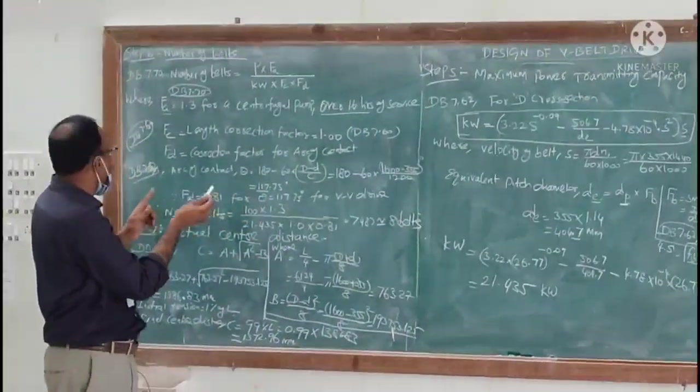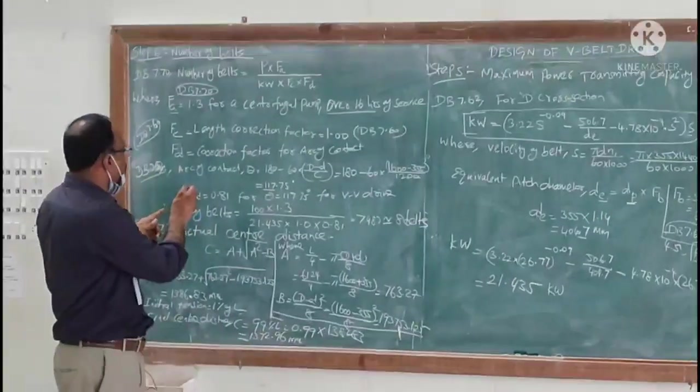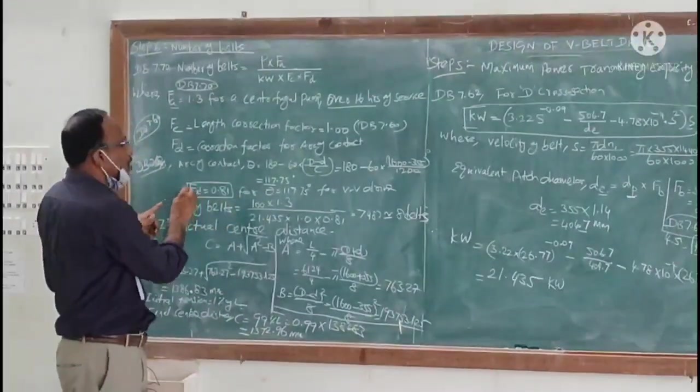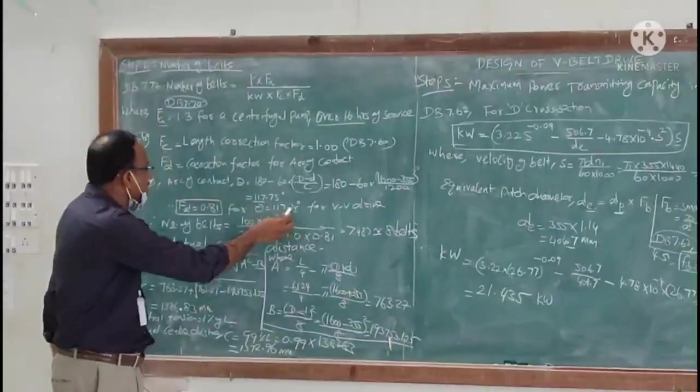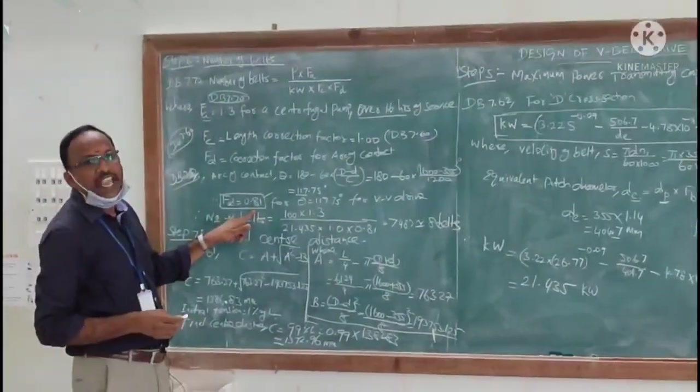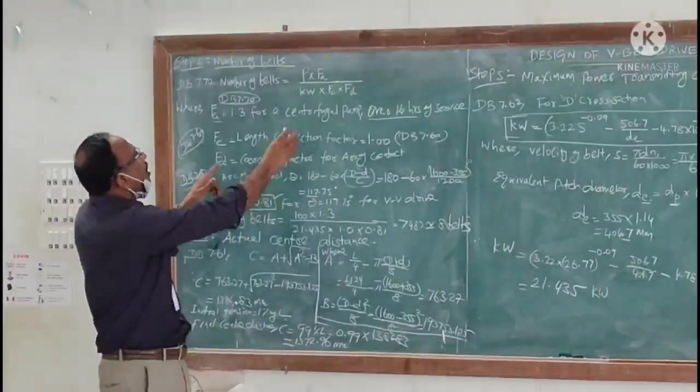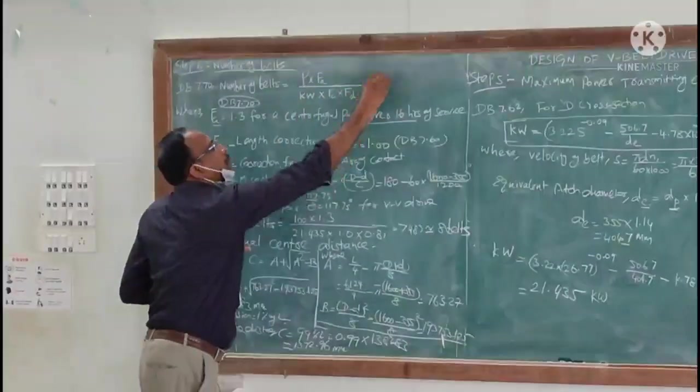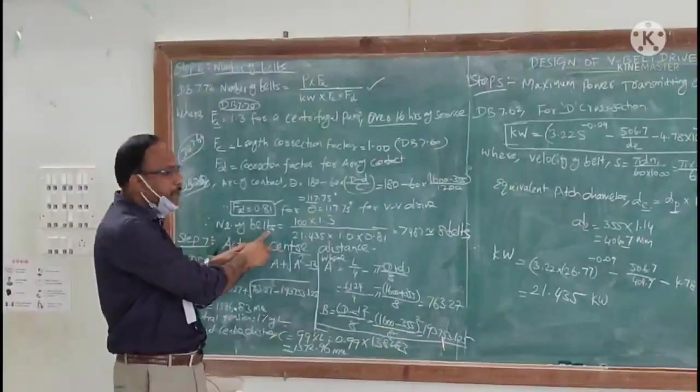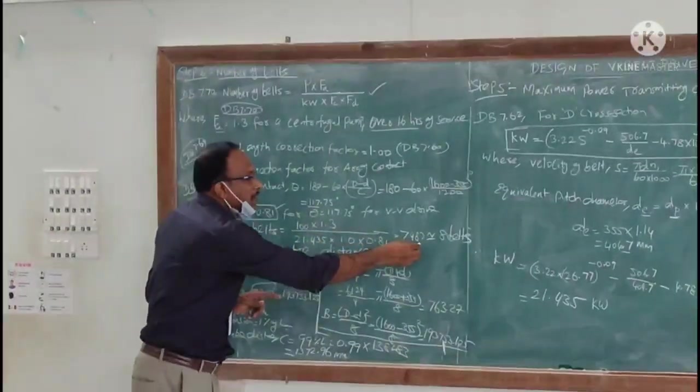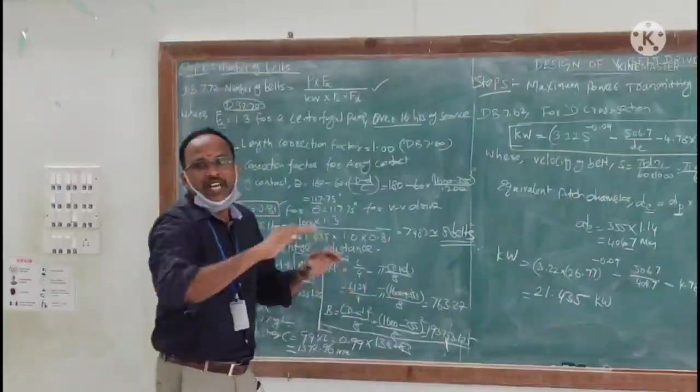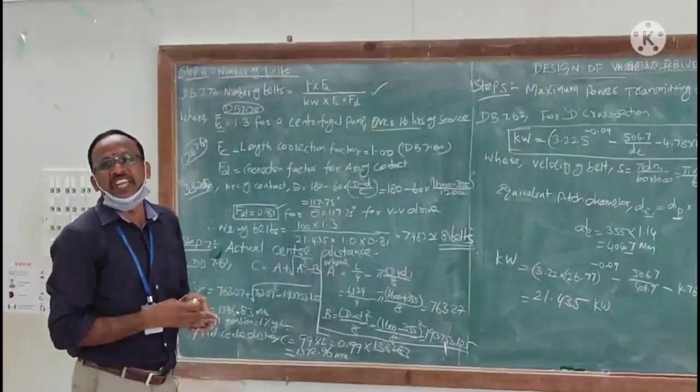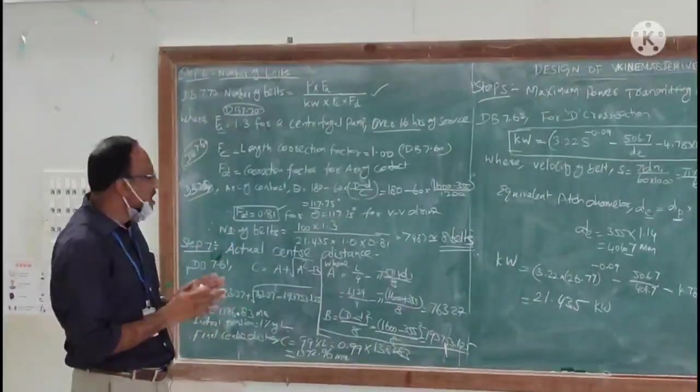Now from the data book, same data book, now we can check this value for V-belt drive. We can take for 117.75, we can get the value as 0.81. We need to substitute all the values in this particular formula. We can get the number of belt as 7.487. We will take the round number as 8 belts for this particular application.